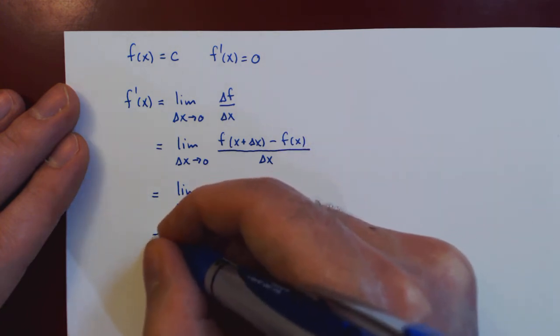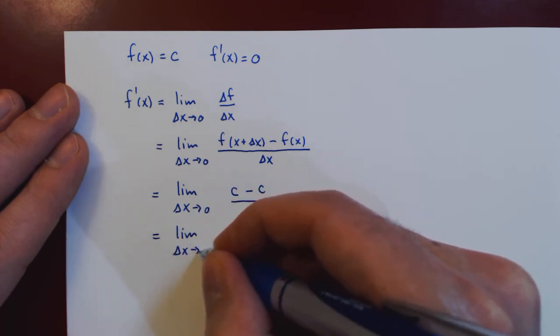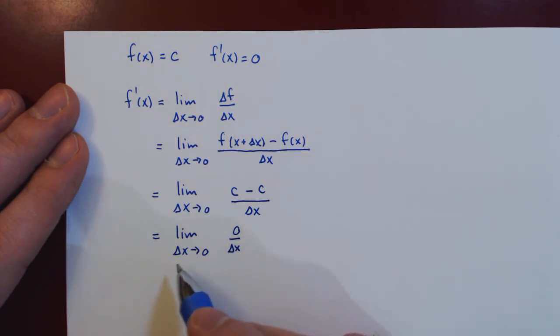And now we can simplify as c minus c is obviously equal to 0. And even though delta x approaches 0, so delta x is getting smaller and smaller and smaller,